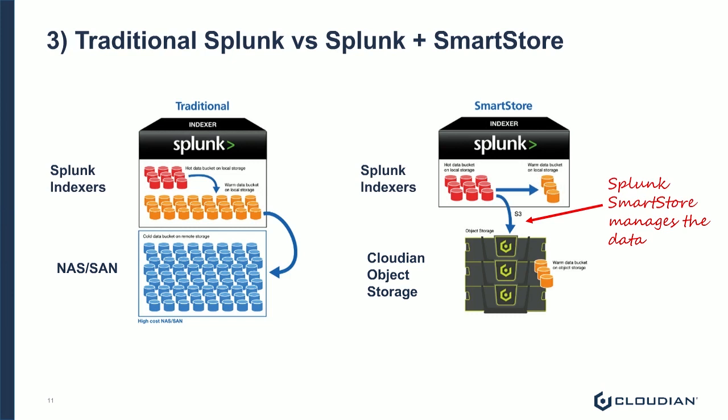Let me move on to the third use case example here, and that is Splunk. People are collecting vast amounts of data from different devices around their infrastructure using Splunk, and it's a great way of visualizing and seeing trends. That data is typically stored in two places: on the Splunk indexers themselves, and also on an attached NAS or SAN device. Splunk has traditionally managed this by keeping a pretty good chunk of the data in the Splunk indexers — what's called the hot and warm buckets in the indexers — and then moving the cold buckets off to a NAS or SAN device.